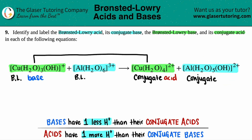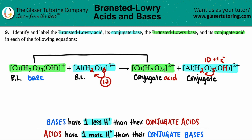Now let's do the same thing with the other pair. I have two hydrogens with a six outside, so that's 12 total hydrogens. Now for the other: two times five is 10, plus one more hydrogen on top — that's 11. Twelve versus 11. This one beats it out by one. The acid always has more hydrogens, so this has to be the acid, and then this one has to be the base.